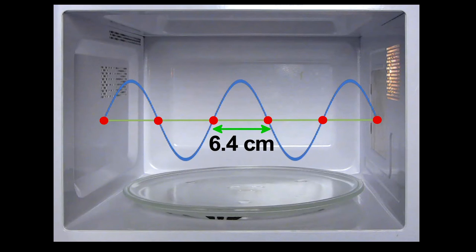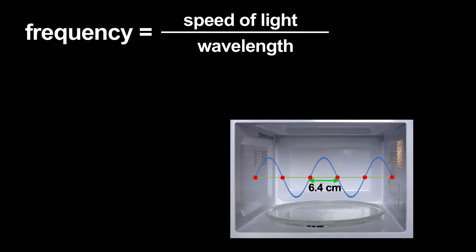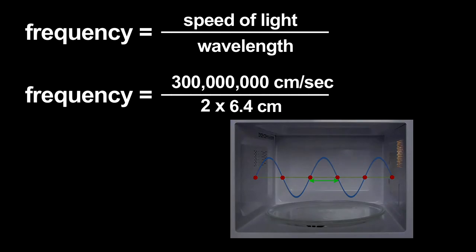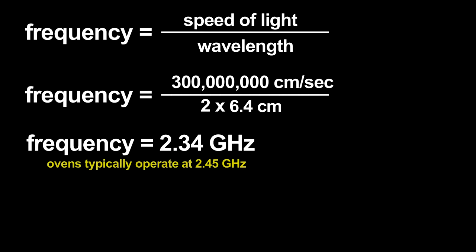Using that wavelength, I can estimate the microwave radiation's frequency. The frequency is related to the wavelength by the speed of light. I get an answer that only has a 4 or 5 percent error – not bad for this primitive measurement.